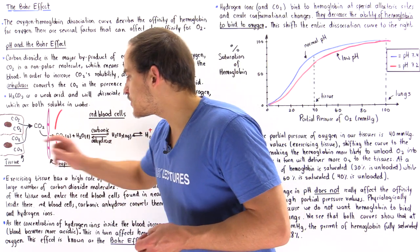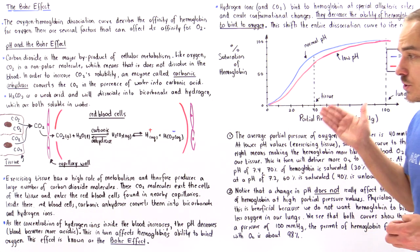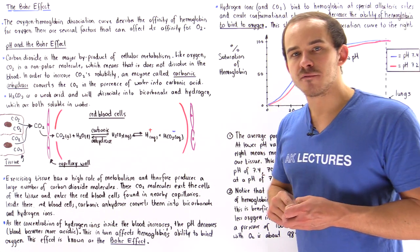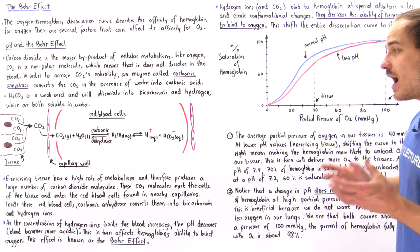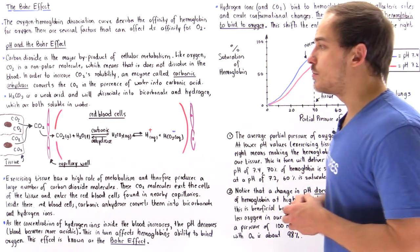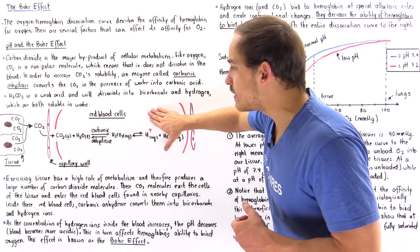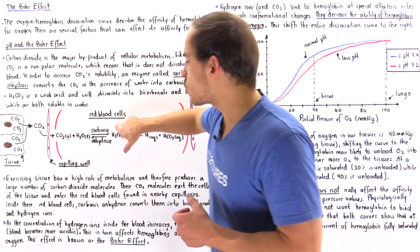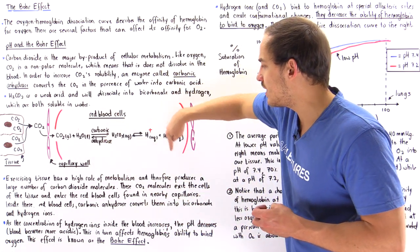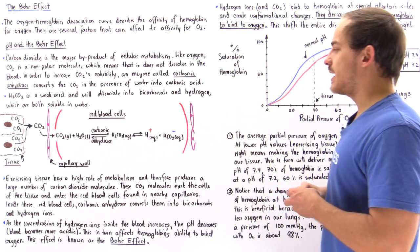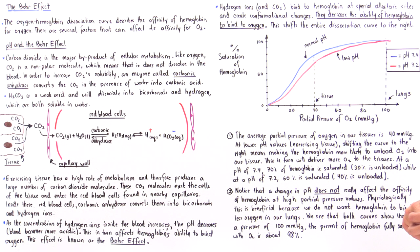Exercising tissue has a high rate of metabolism and therefore produces a large number of carbon dioxide waste byproducts. Because CO2 is not soluble in blood plasma, it is ultimately moved into the red blood cells where carbonic anhydrase transforms it into H+ ions and bicarbonate ions, which are soluble in blood plasma.